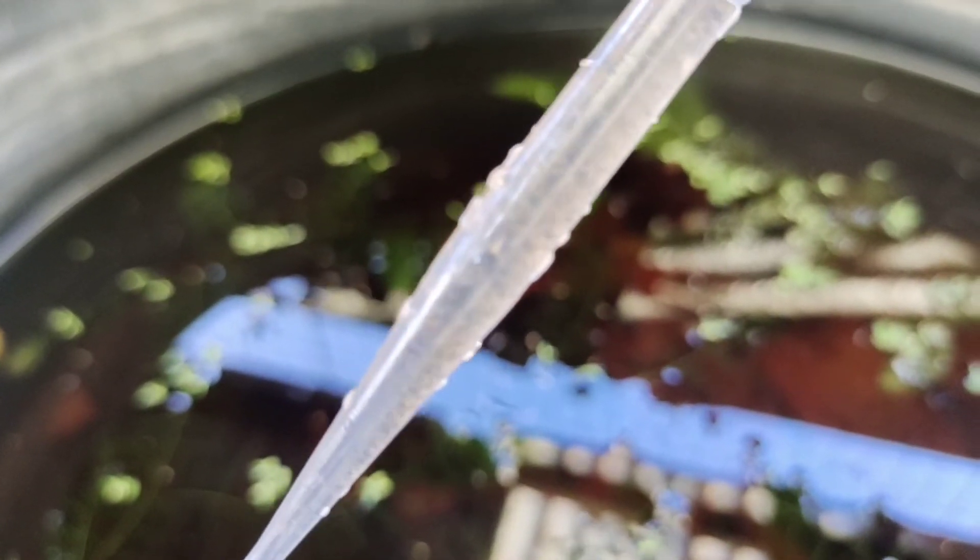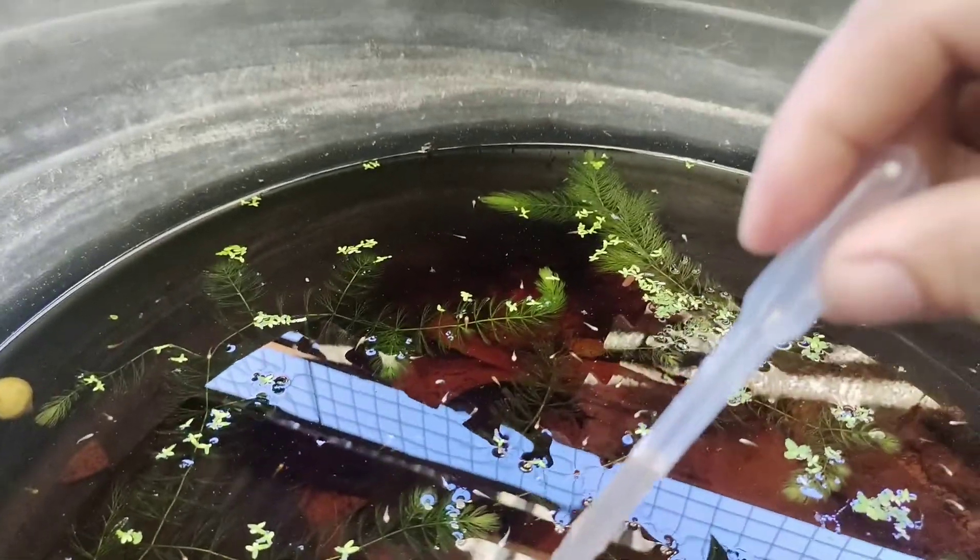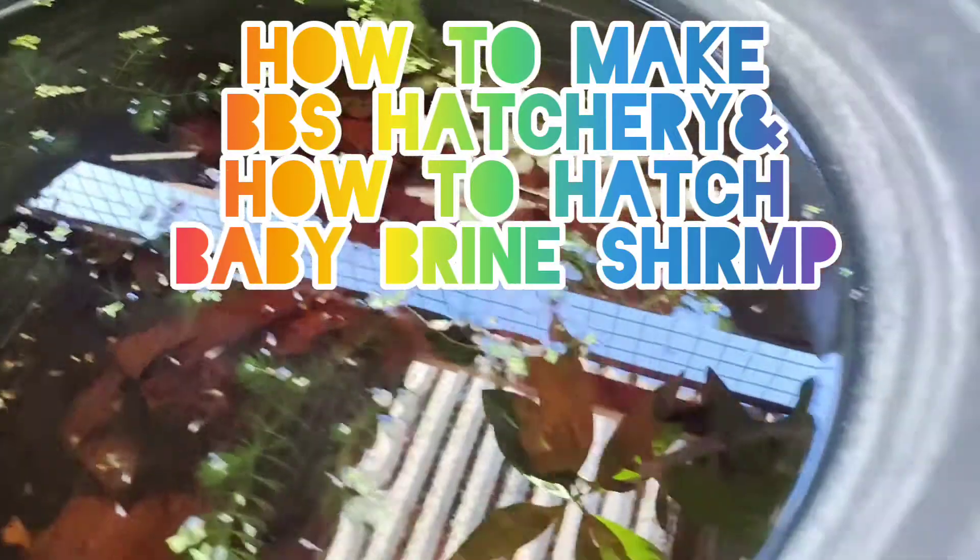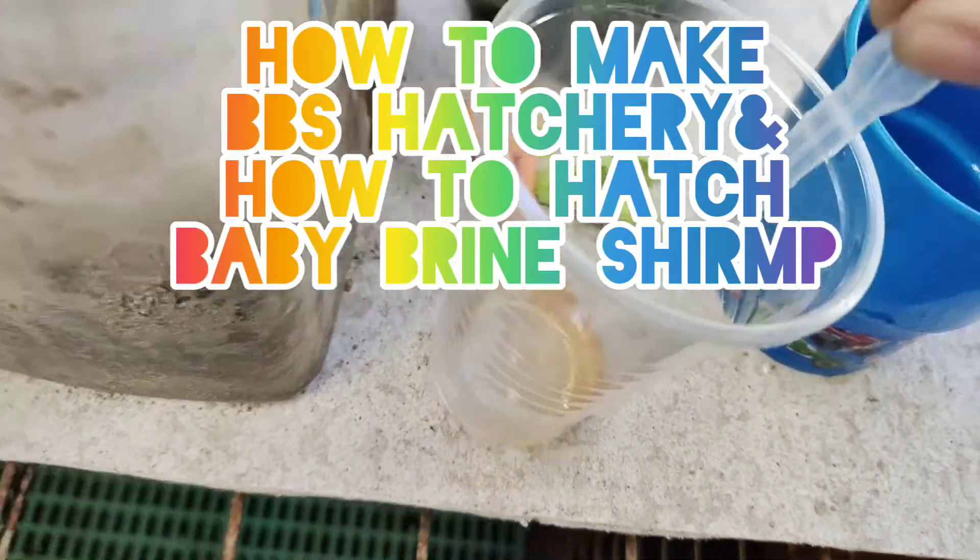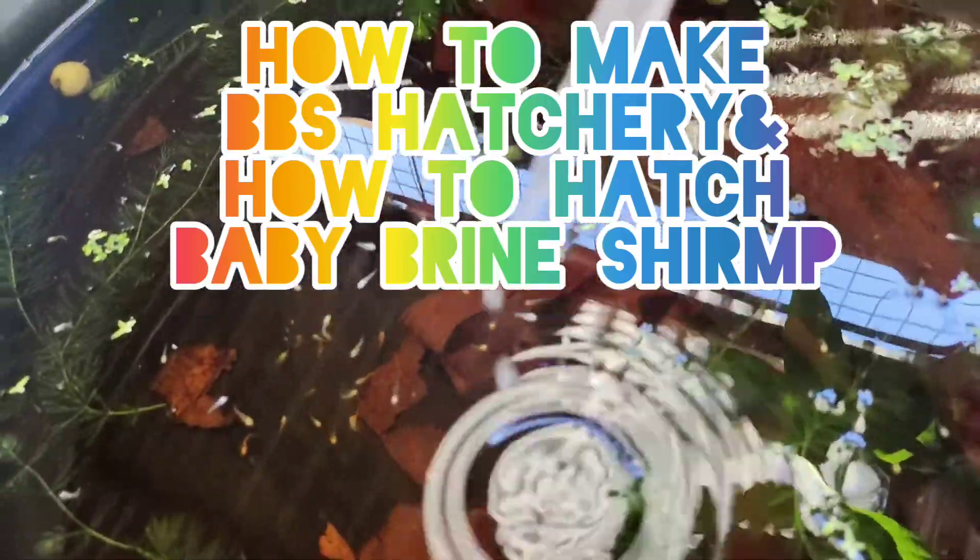Hello guys, welcome back to our channel. This is a baby brine shrimp that I just hatched, and we are going to feed them to our betta fish fry. This is a very important source of protein which will help them grow and is a must-have fry food if you are breeding betta fish. In this video, I'm going to share with you how to make a baby brine shrimp hatchery and how to hatch them up to feeding them to your betta fish fry.